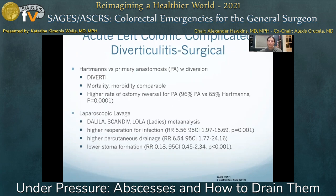When initial treatment fails, surgical management is needed. For most patients, resection is the most appropriate surgical approach. The DIVERTI trial found comparable mortality and morbidity between Hartmann's resection and primary anastomosis with diverting ostomy, with a higher rate of ostomy reversal after primary anastomosis.